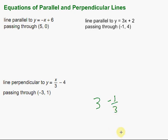Let's start out by finding a parallel line to this equation: y equals negative x plus 6, and we want it to pass through the point (5, 0). The first thing we need to find is the slope, and we're going to pick that out of this equation. Right in front of the x — the slope is negative 1. So the slope of a parallel line is also going to be negative 1.